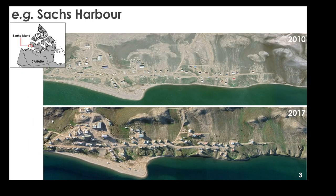For example, here in Sachs Harbour, there appears to be evidence between images taken in 2010 and 2017 of coastal change, both erosional and accretionary. The need is to understand more about the associated spatial scopes of these changes and the rates at which they are occurring.